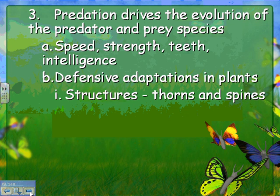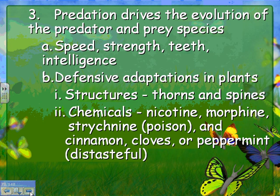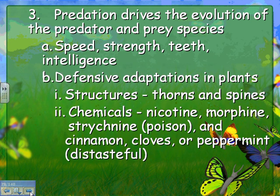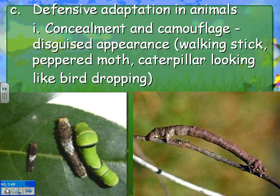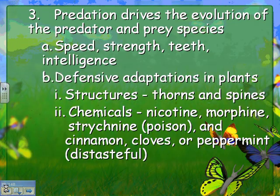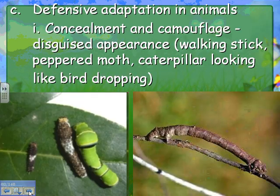Defensive adaptations also happen in plants. Structures like thorns and spines inhibit animals from eating them. Plants also produce chemicals like nicotine, morphine, and strychnine — which is a poison — as well as cinnamon, cloves, and peppermint, which are distasteful without sugar. These are all defenses that plants have evolved over time to reduce how much animals eat them.